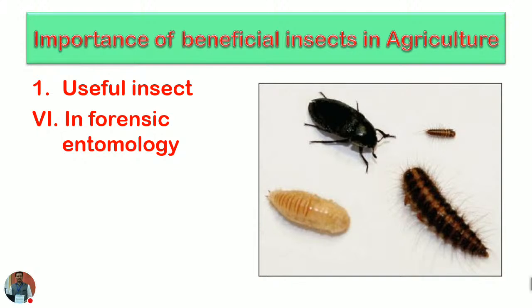Many insects are utilized in forensic entomology. The forensic sciences use these insects to help detect crimes. Their life cycle and the four stages — egg stage, larval or grub stage, pupal stage, and adult stage — provide a basic understanding of the duration since a particular death or a carcass was left over, allowing crime inquiry to be conducted through forensic entomology.